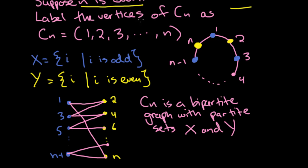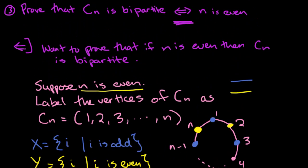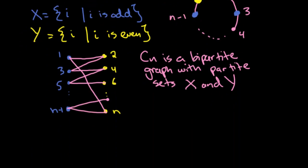So if n is even, then the cycle on n vertices is bipartite. That's just the first part — we've shown this direction, the fact that if n is even, then the cycle is bipartite. Now what we need to show is that if the cycle is bipartite, then n is even.